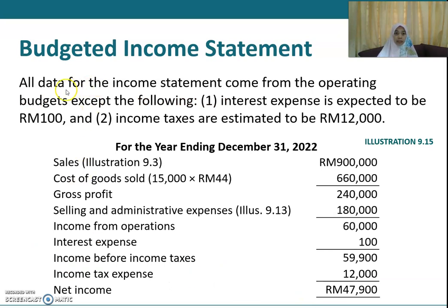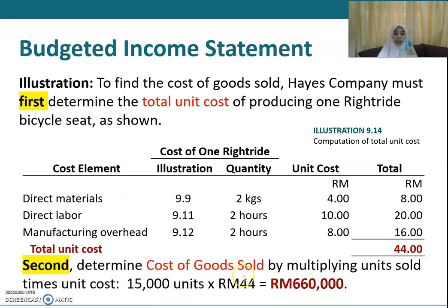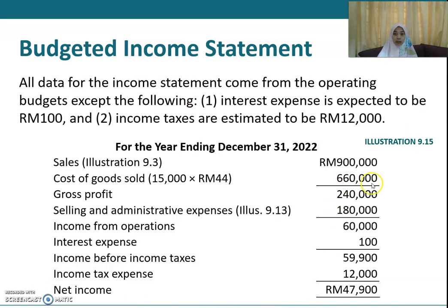Now you prepare your budgeted income statement. All data comes from the operating budgets except additional information given in the question: interest expense of 100 ringgit and income tax of 12,000 ringgit. For the year ending December 31st 2022: sales are 900,000 ringgit, cost of goods sold is 660,000 ringgit (15,000 units times 44), giving a gross profit of 240,000 ringgit.